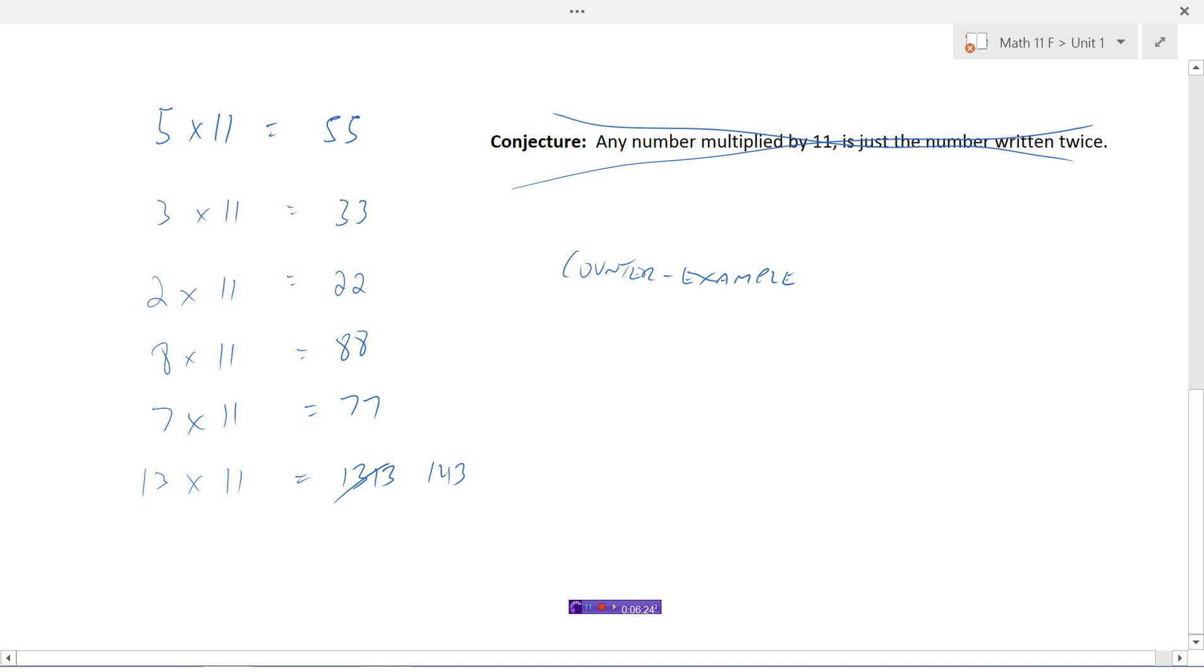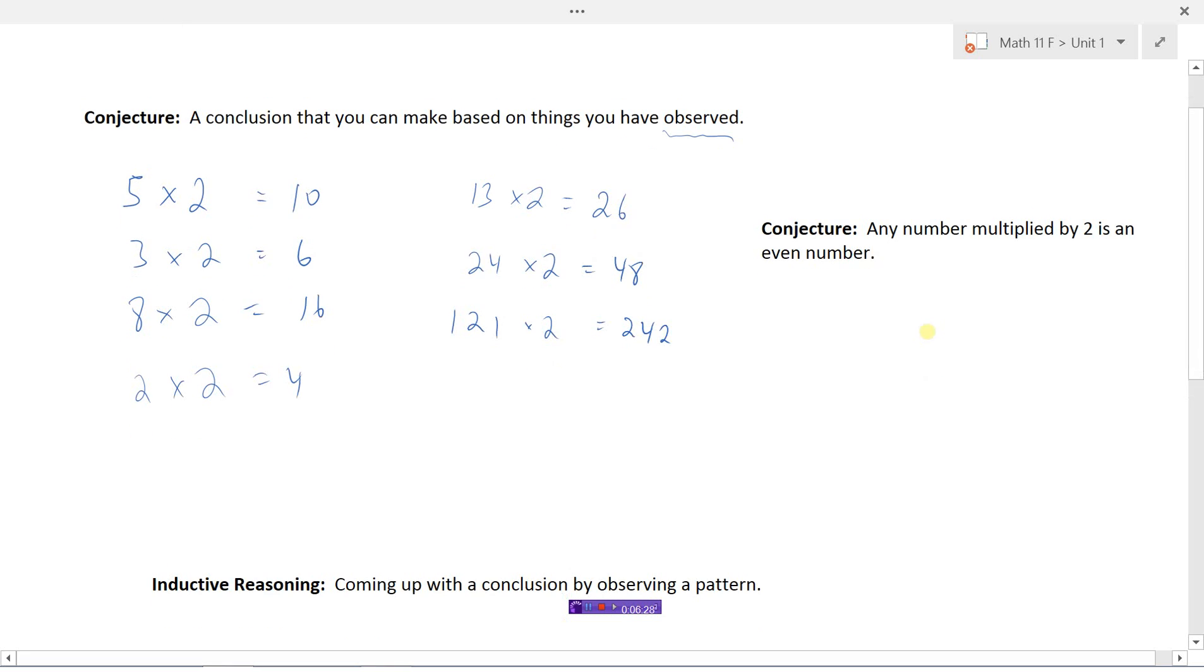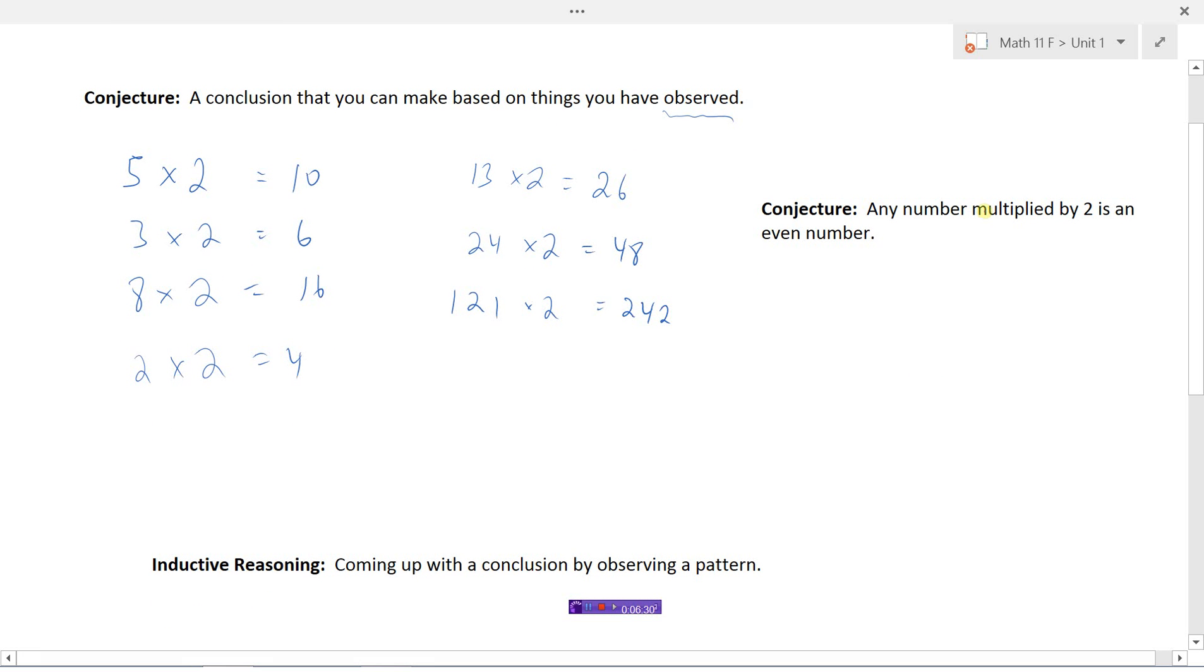So that's what conjectures are. They're just guesses that we are making based on things that we have observed. And one of the ways we can come up with that is through inductive reasoning. By looking at the pattern and seeing that the pattern fits for several examples.